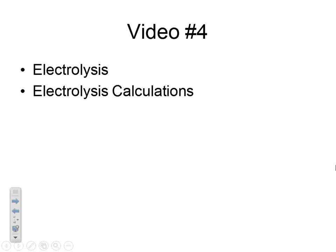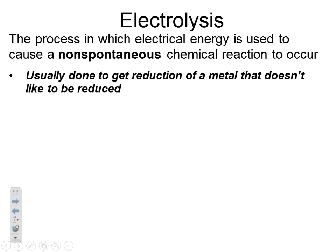Welcome. This is our final video in the electrochemistry unit, and it is going to be on electrolysis and electrolysis calculations. You might remember from Regents Chemistry the term electrolysis, because you did in fact learn about an electrolytic cell there. Electrolysis is the process where we take electricity — electrical energy — and use it to cause a non-spontaneous chemical reaction to occur. So an electrolytic cell is in many ways the opposite of a voltaic cell.